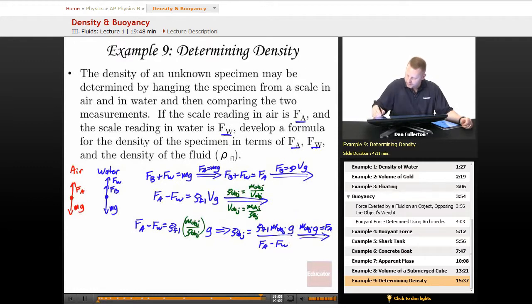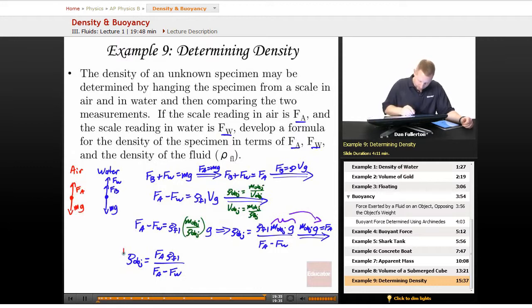So mass of the object times G, right here, I'm going to replace with FA to write that the density of our object is equal to FA times the density of our fluid divided by the scale reading in air minus the scale reading in water.